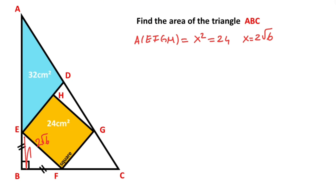If you focus on this triangle, this triangle is an isosceles right triangle. So here is 45 degrees, and here is 45 degrees, and here is 45 degrees as well — if you know that angle EFG is 90 degrees, so 45 degrees is left here.